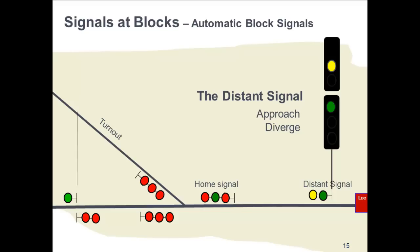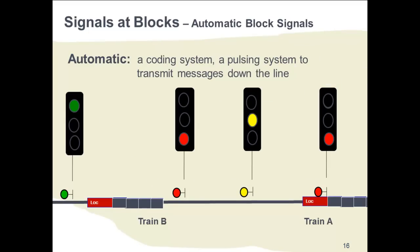Distance signals provide trains with advance warning of an interlocking, and the home signals are at the interlocking. The westbound train moves towards the distance signal that indicates approach diverge — meaning continue ahead and diverge at the turnout ahead. For distance signals, the top head indicates the straight-ahead move and the bottom head indicates the diverging move. The distance signal is part of the automatic block signal system and is the last automatic signal before the home signal at the interlocking. A red signal at an interlocking home signal means stop and do not move — stop and stay.